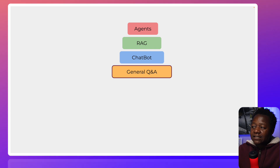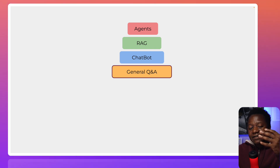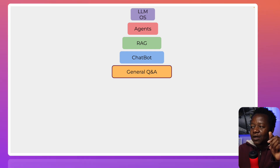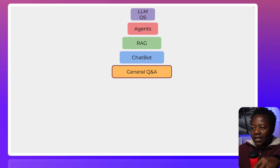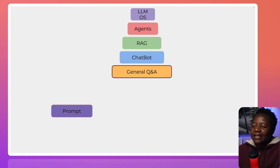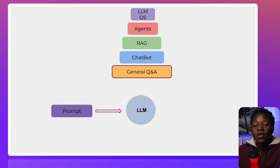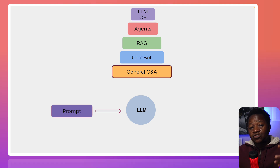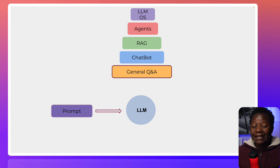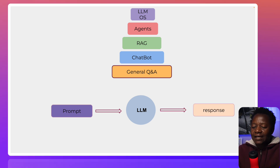At the base we have General Q&A. This is the question and answering system — the simplest system that we can put together. Essentially, we have a prompt that we write, and we pass that prompt through a large language model. Because it was trained on a lot of different datasets, it is able to give us a response.